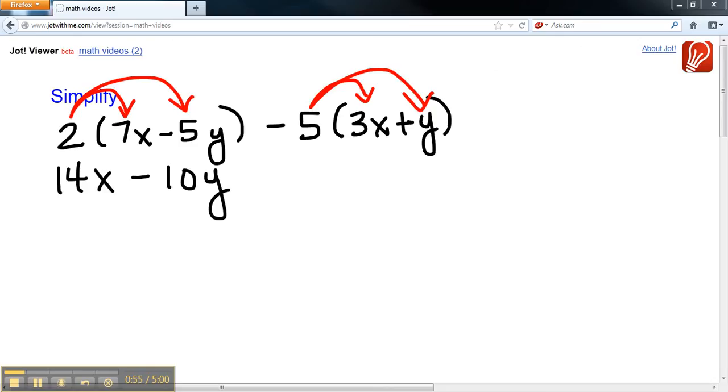The next parentheses we're going to distribute the negative 5. So we have negative 5 times positive 3x, this is minus 15x. And we have negative 5 times y, this is minus 5y.